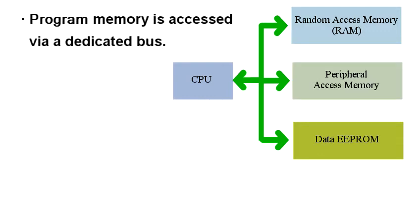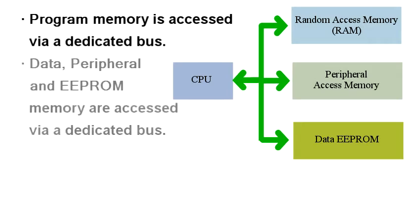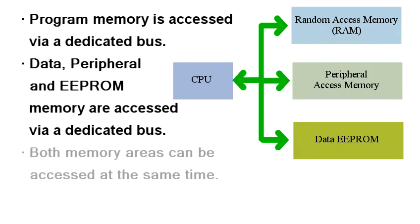All these different types of memory are split up into two main groups in a microcontroller. The first, program memory, is stored in its own area and accessed via a dedicated data bus. The second, data, peripheral, and EEPROM memory are located in another dedicated area and accessed via a dedicated bus. It's the second area that we'll be looking at in this video.